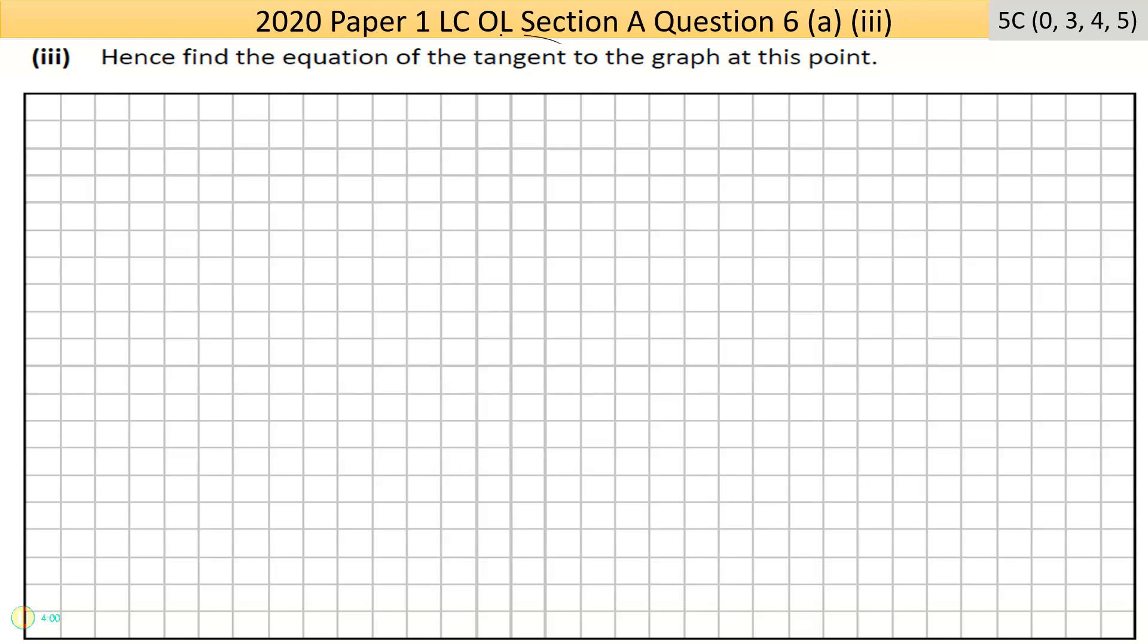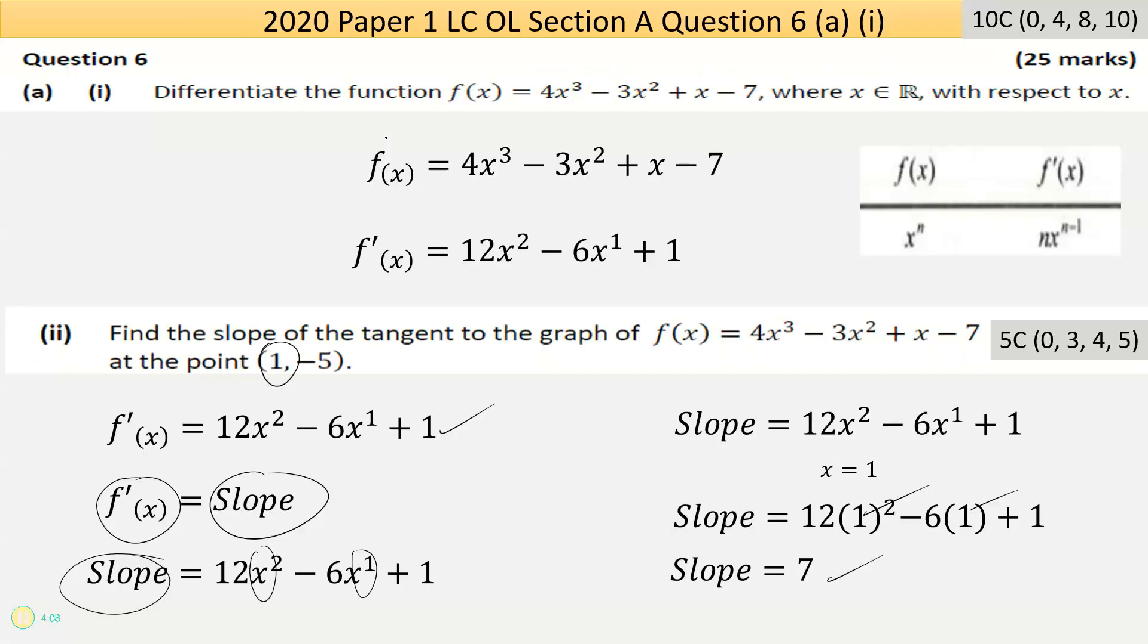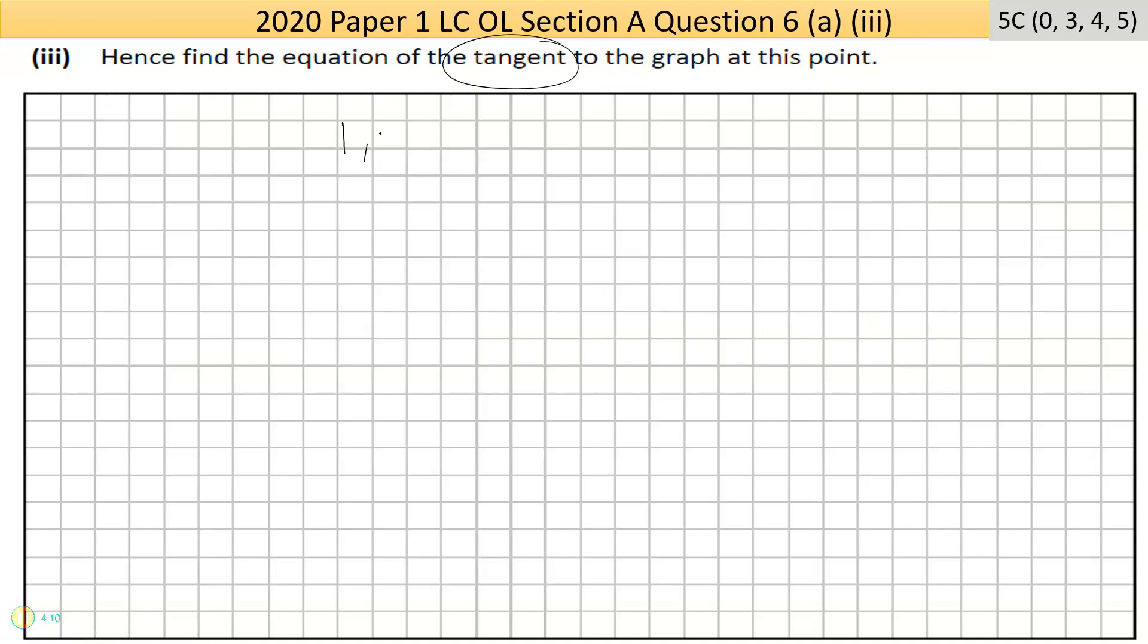The next one says find the equation of the tangent - again, a tangent is a line that touches the graph at one point only - of the graph at this point, so the point was (1, -5). We've just worked out the slope equals 7. That'll be important because I want to use the equation of the line formula. To do this, I need to know a point, that's your x₁, y₁, and that's your m value.